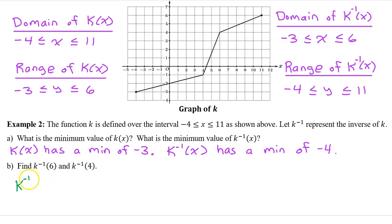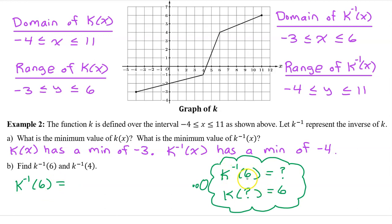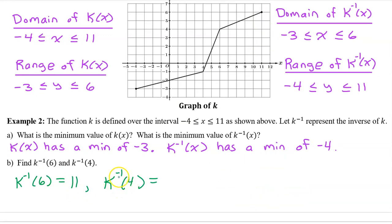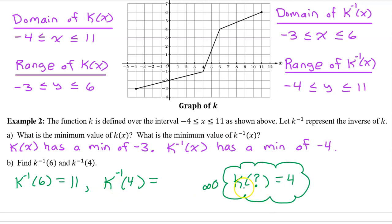The way inverses work, k inverse at 6 will equal some value only if k at that value is equal to 6. So to evaluate the inverse, you ask yourself: k at what will equal 6? Well, 6 is up here, so k at 11 is equal to 6. So the answer is 11. Next, we must evaluate k inverse at 4. Just ask yourself: k at what is equal to 4? We see that k at 6 is 4. So the answer is 6.